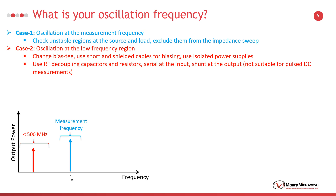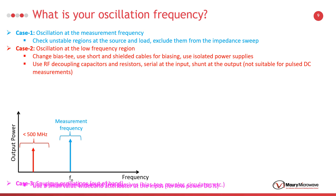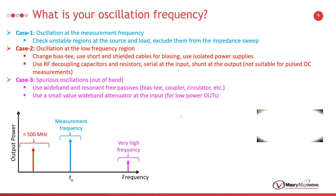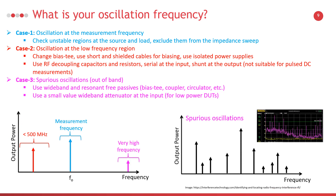Don't forget that you cannot use additional components on the biasing line if you perform pulsed DC measurements. The third one is spurious oscillations. If you see many signals on the spectrum analyzer's monitor, it's a spurious oscillation. To solve it, you can try to avoid resonances in a wide frequency range using wideband passive equipment such as bias tees, couplers, and circulators. If the DUT is being measured at low power, a small wideband attenuator at the source can also be used to provide a resonance-free termination at the input.